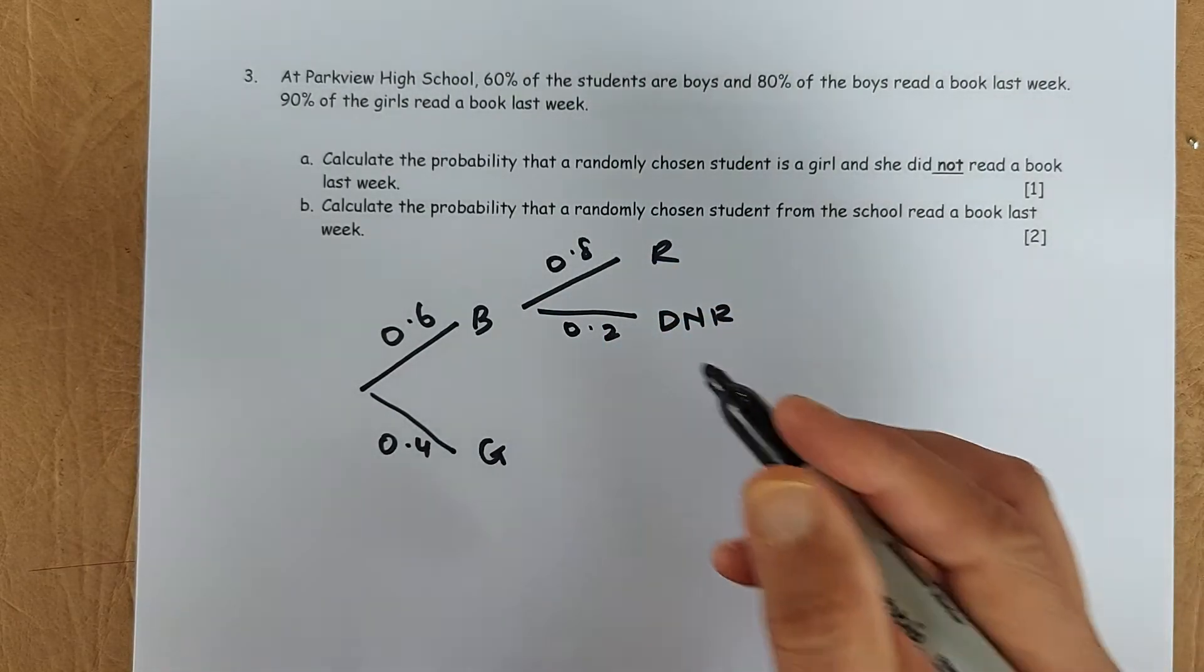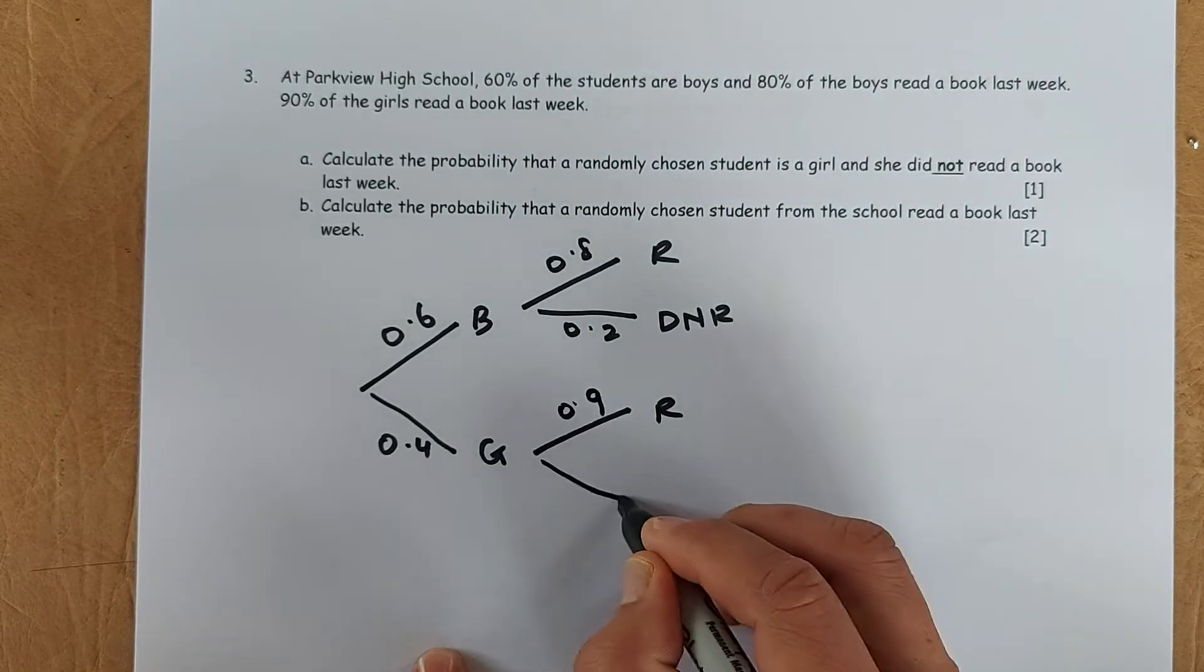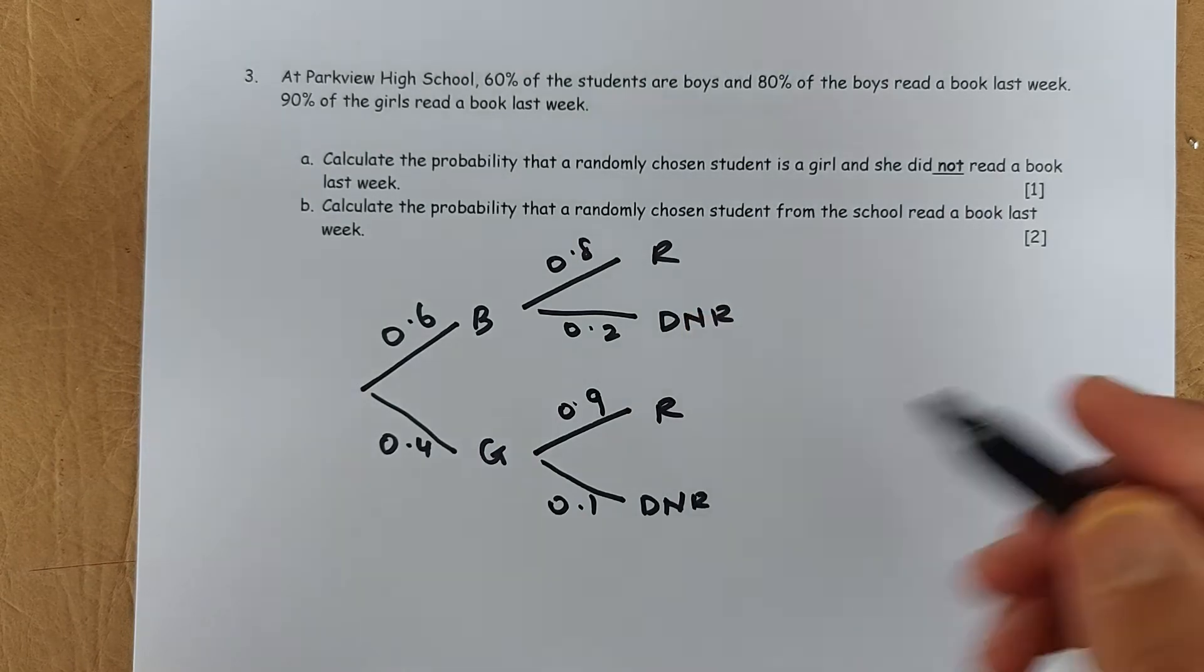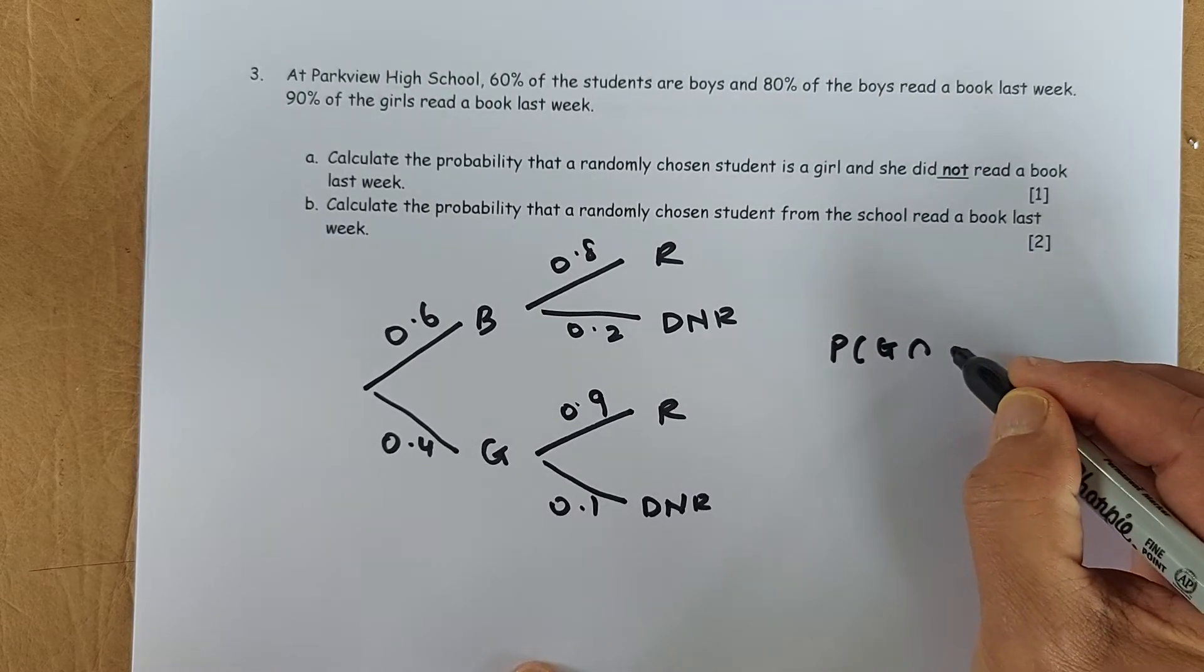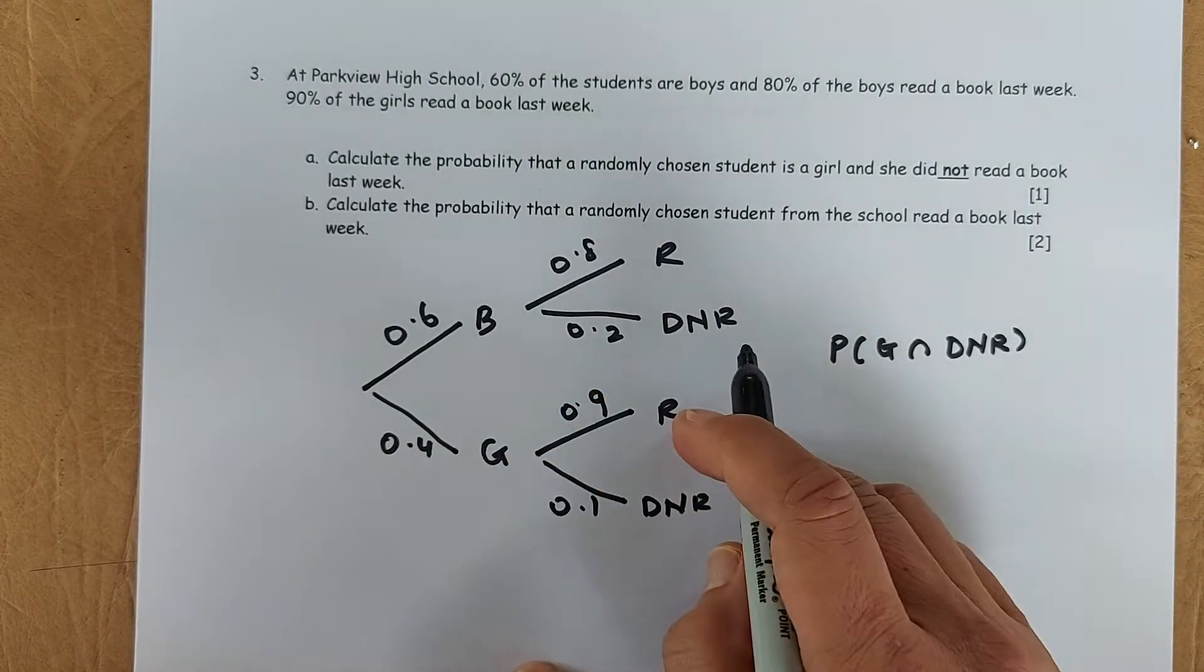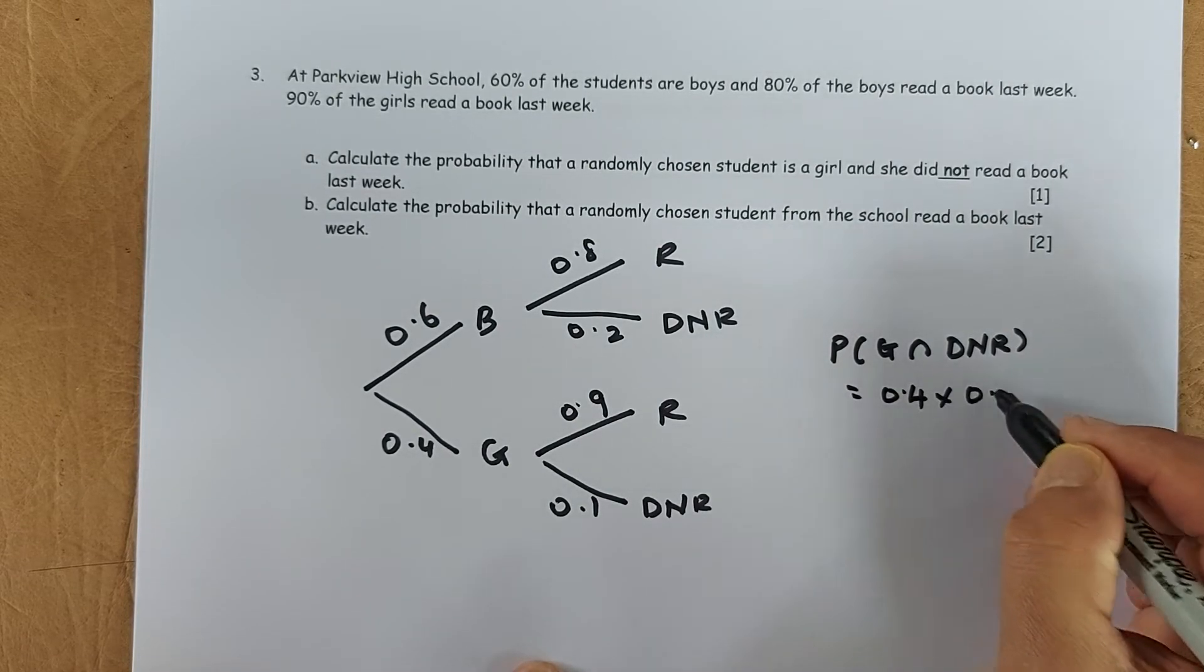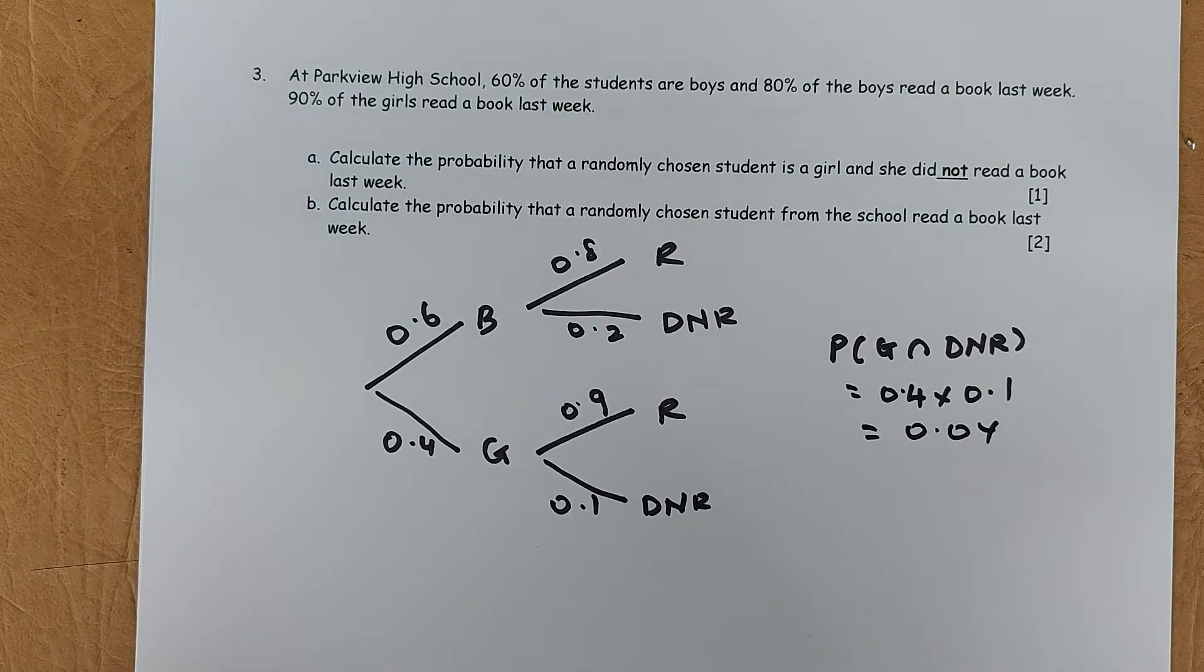90% of the girls read the book. So girls read the book, 0.9, and do not read, did not read, is going to be 0.1. So that's the tree. And now they ask you, what is the probability is a girl and not read, do not read. So it's going to be a girl and do not read. So 0.4 times 0.1 is going to be 0.04.